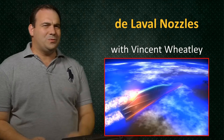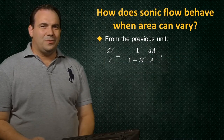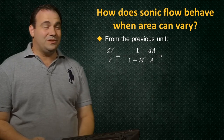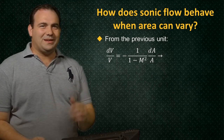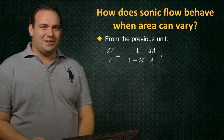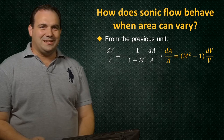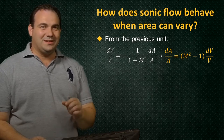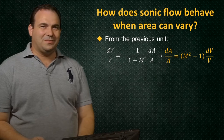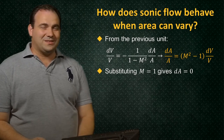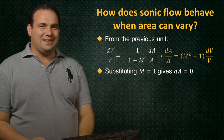But what happens when the flow is sonic? We can investigate this by taking our equation for the differential velocity change from the last unit and multiplying through by 1 minus the Mach number squared. We obtain that the area dilatation is equal to m squared minus 1 times the velocity dilatation. Substituting m equals 1 for sonic flow, the factor of m squared minus 1 on the right-hand side is going to be 0, thus the area change dA equals 0.